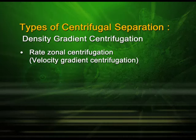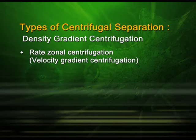Inside the centrifuge tube you place your sample. Density gradient centrifugation is of two types: one is rate zonal centrifugation, and the second is isopycnic centrifugation. Now let us discuss rate zonal centrifugation, otherwise known as velocity gradient centrifugation. It is a type of density gradient centrifugation, so a density gradient media is already placed inside the tube.